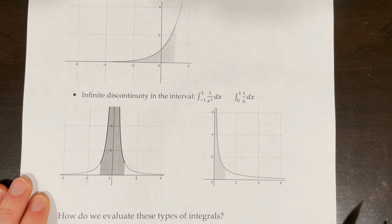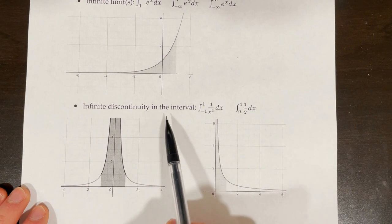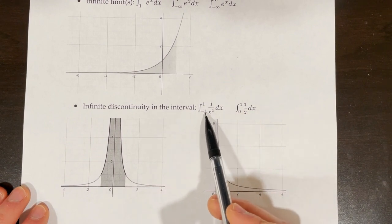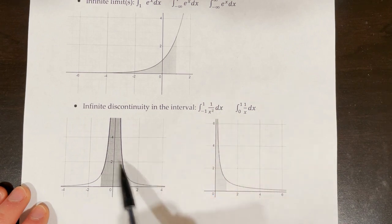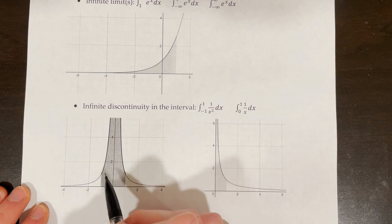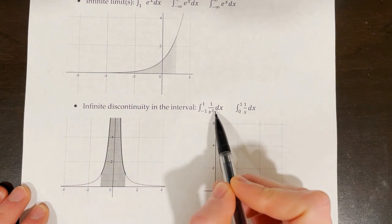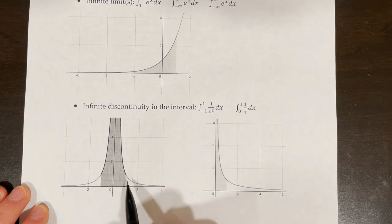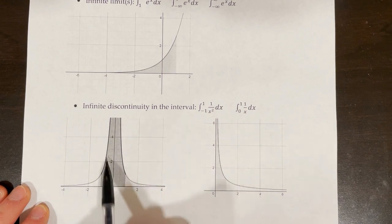The other option for how you could have an improper integral is that you could have an infinite discontinuity in the interval. For example, if we were taking the integral from negative 1 to 1 of 1 over x squared dx — represented by this graph — both solid lines are going up to infinity because we have a vertical asymptote at x equals 0. Since when x equals 0, our denominator is 0, it's possible that we don't have a finite amount of area in this shaded region.